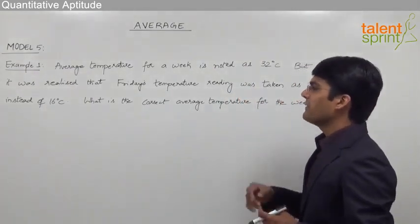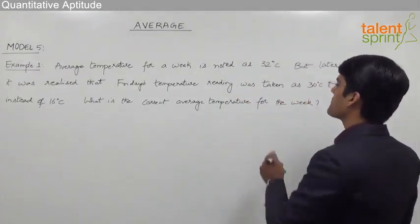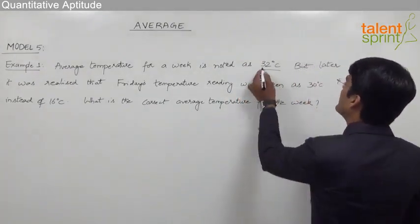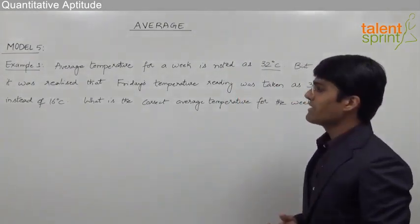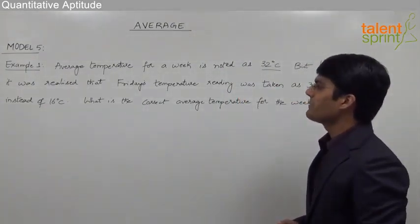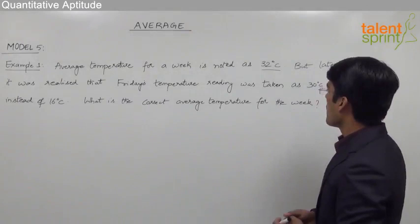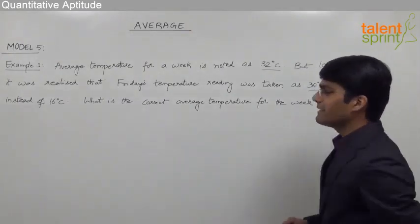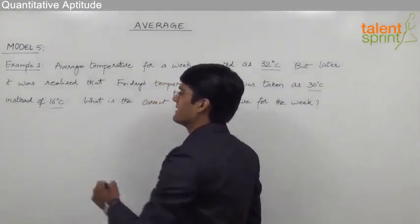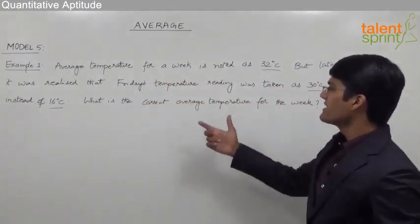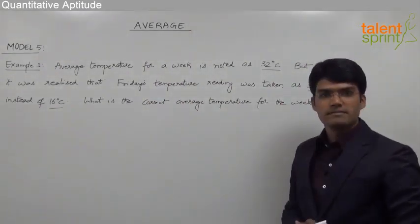The average temperature for a week is noted as 32 degrees. But later it was realized that Friday's temperature reading was taken as 30 degrees instead of 16 degrees. So what is the correct average temperature for the week?